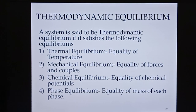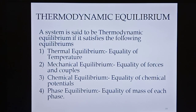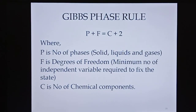Next comes thermodynamic equilibrium. For a system to be in thermodynamic equilibrium, it has to satisfy four equilibrium conditions: thermal equilibrium — equality of temperature; mechanical equilibrium — equality of pressure; chemical equilibrium — equality of chemical potential; and phase equilibrium — equality of mass of each phase. When all four equilibrium conditions are satisfied, the system is in thermodynamic equilibrium.